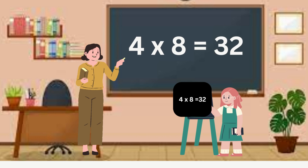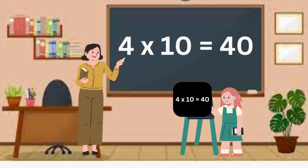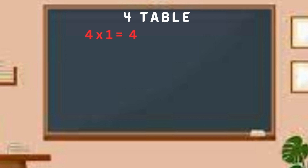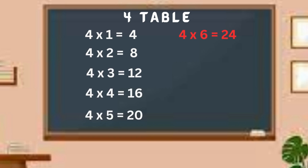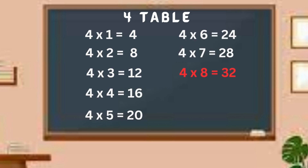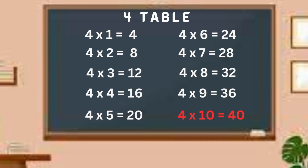Four nines are thirty-six. Four tens are forty. One or four. Two or eight. Three or twelve. Four or sixteen. Five or twenty. Six or twenty-four. Seven or twenty-eight. Eight or thirty-two. Nine or thirty-six. Ten or forty.